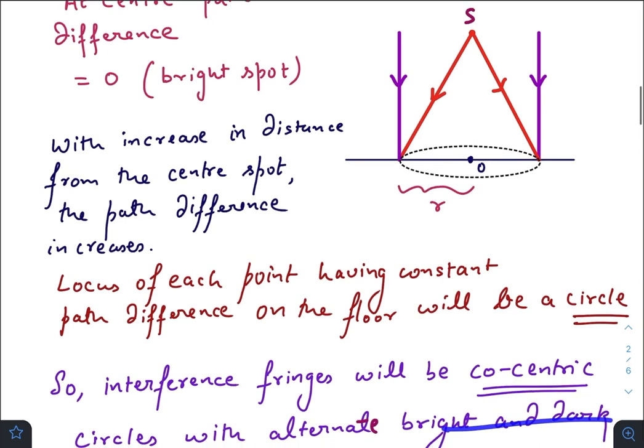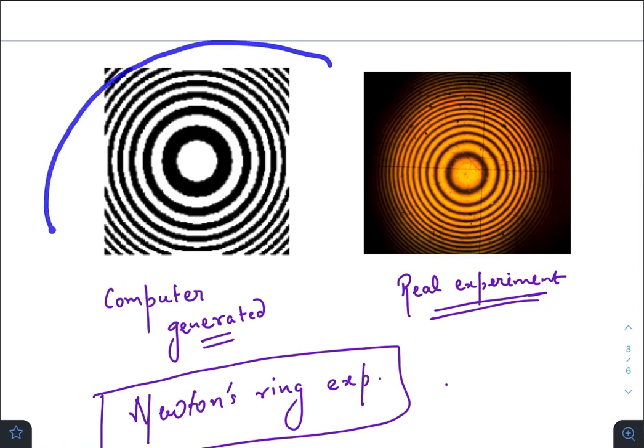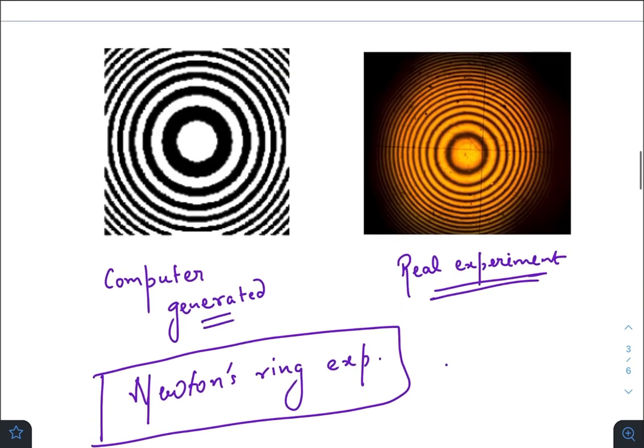So if I want to show you the interference fringes, it would look something like this. This is a computer-generated image, and this how a real experiment would show, just like the above situation. This is known as Newton's ring experiment. I think in your first year of B.Tech or M.Sc., you will be doing this experiment of Newton's ring where you will find out the unknown wavelength of sodium vapor lamp.